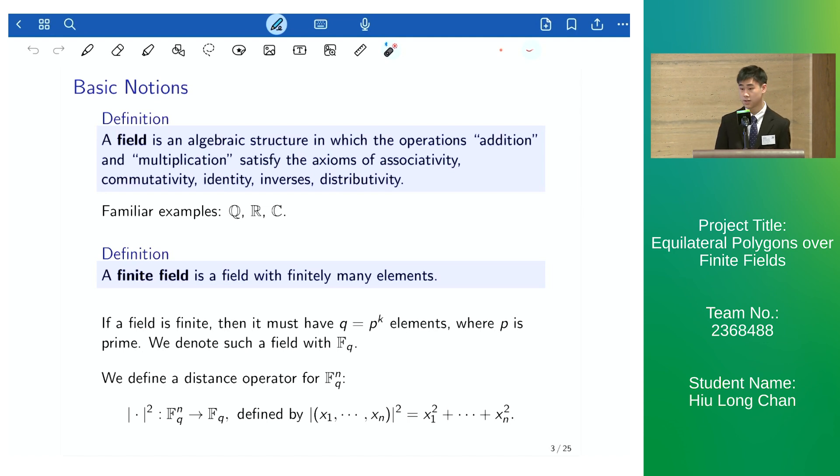We can define a distance operator for this vector space over a finite field, and it is just the sum of the squares of the coordinates.